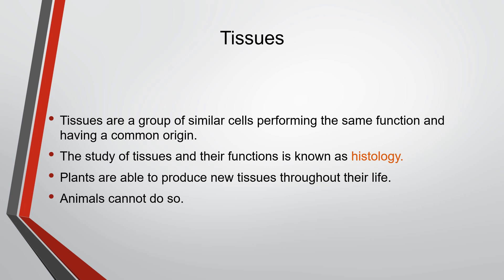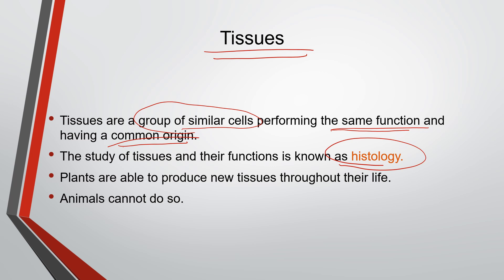So what are tissues? Tissues are a group of similar kinds of cells which are performing the same function and having a common origin. The study of tissues and their functions in biology is called histology. So tissues are groups of similar cells with the same function and common origin, and the branch of biology dealing with their study is histology.